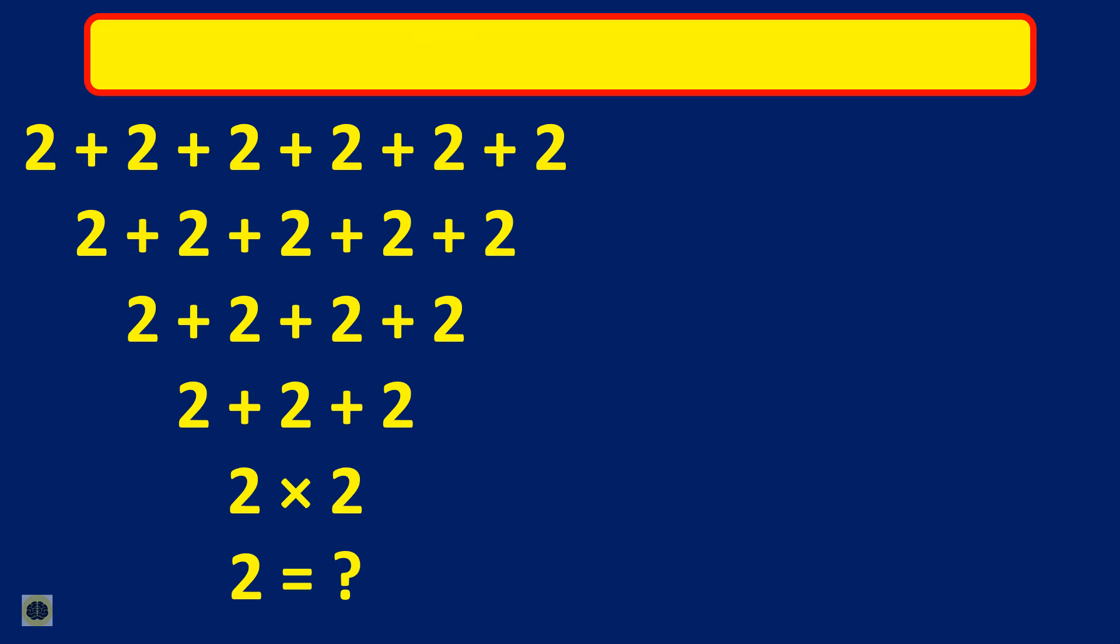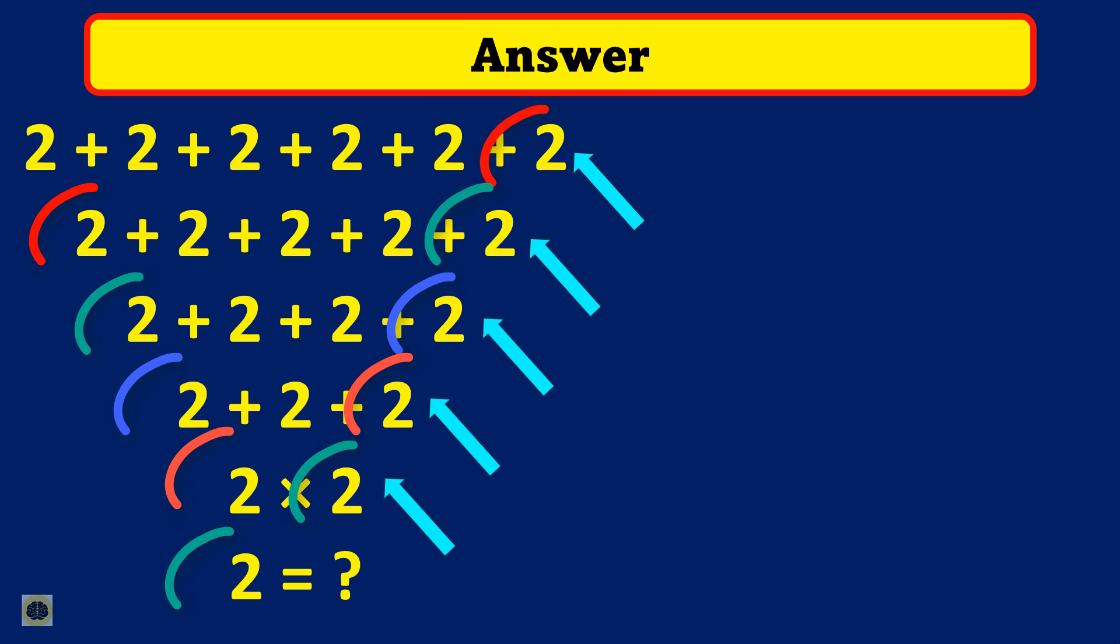Let me explain the solution now. There is some ambiguity in the way this expression is written, so it can be interpreted in different ways which can lead to different answers. However, the most common interpretation is that the lines ending with 2 don't have a plus sign next to them, which means they should be combined with the following line.